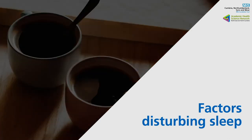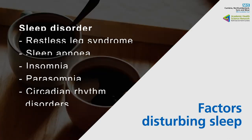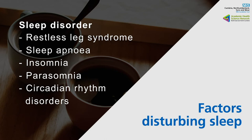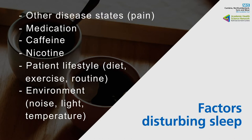There are many factors which can disturb sleep. These include a sleep disorder such as restless leg syndrome, sleep apnea, insomnia, parasomnias such as sleepwalking, and circadian rhythm disorders. Another disease state such as pain can also disturb sleep, as can stimulating substances such as medication, caffeine, and nicotine. The patient's lifestyle — their diet, exercise, and daily routine — as well as the noise, light, and temperature of the environment they sleep in, can also affect sleep.